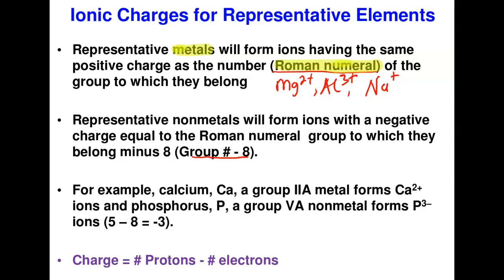For representative nonmetals, the charge equals the group number minus 8. For example, phosphorus is in group 5: 5 − 8 = −3, so phosphorus forms a P³⁻ ion. The charge of an ion is also calculated as: charge = number of protons − number of electrons. We'll use this formula to complete the table exercise.